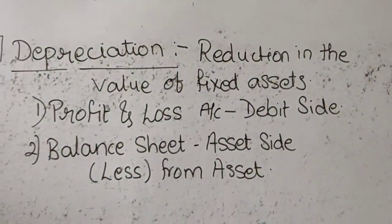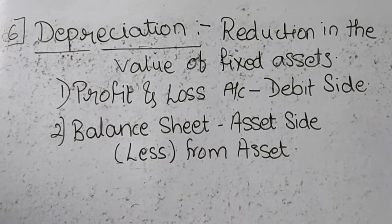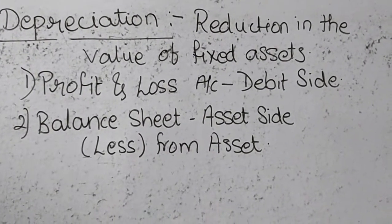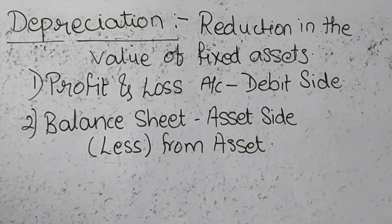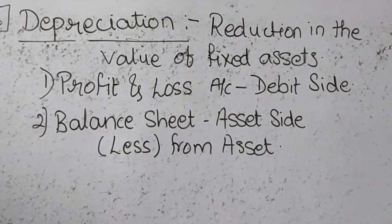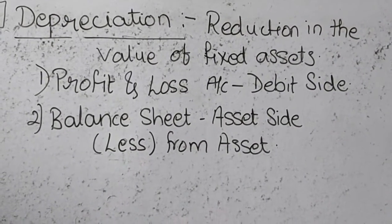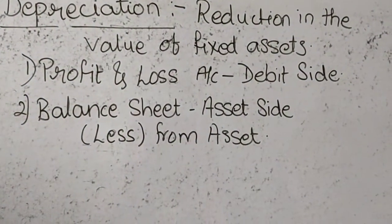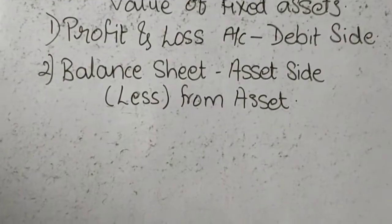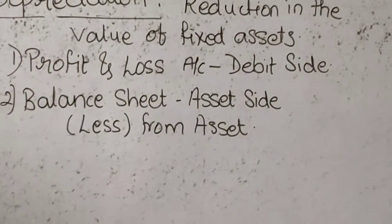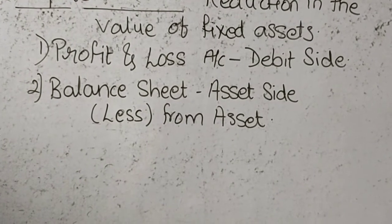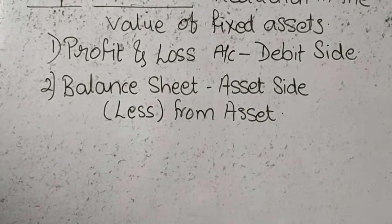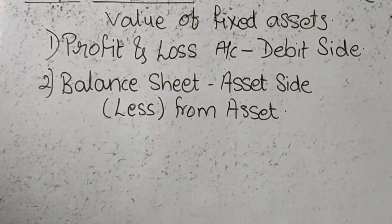The next adjustment is depreciation, which we had seen in our last year's syllabus. Depreciation means reduction in the value of a fixed asset. When the value of the fixed asset gradually decreases due to continuous use, it is called as depreciation. Depreciation is a non-monetary loss of the business, and it is compulsory for every business to charge depreciation on the fixed assets available with them.